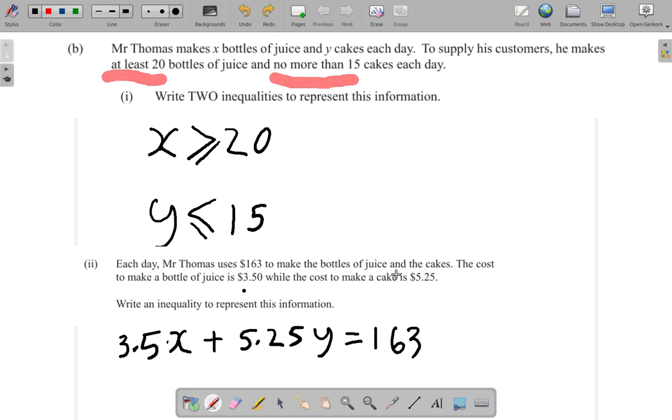But now let's see what they said. They say each day Mr. Thomas uses that to make juice and cakes. The cost to make each juice is that and the cost to make Y cakes is that. Write an inequality to represent this information.